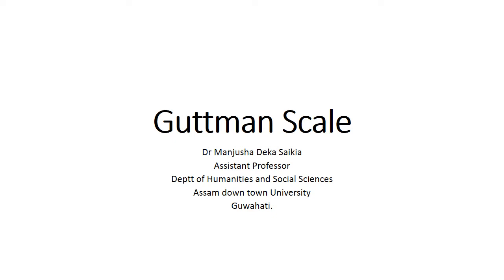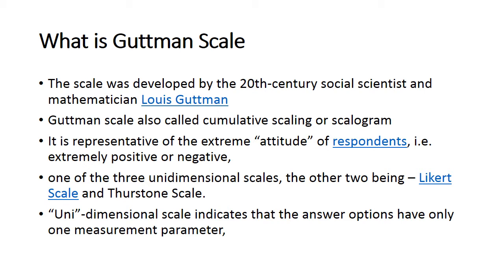Hello students, the topic of today's class is Guttman scale, also known as scalogram or cumulative scale. This class is for the fourth semester students of BA Arts in Psychology. The name Guttman came from its founder Louis Guttman, who was a social scientist. In the 20th century, he developed this scale to measure the attitude of respondents.